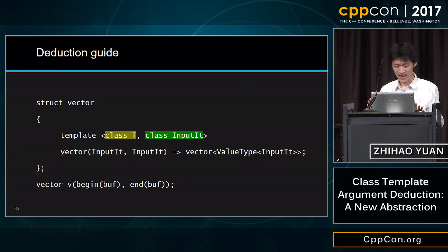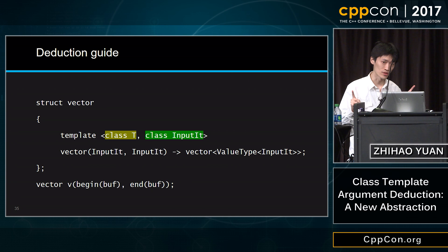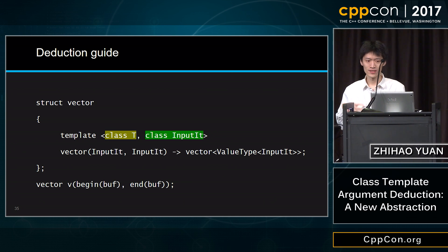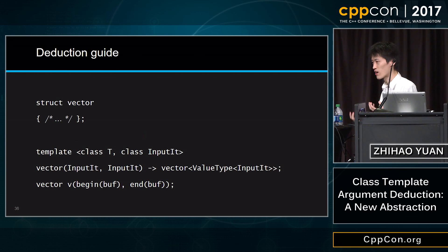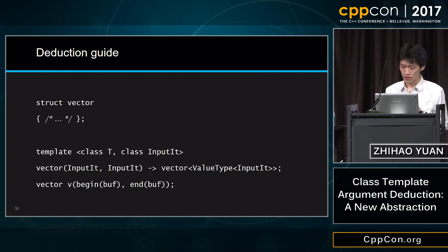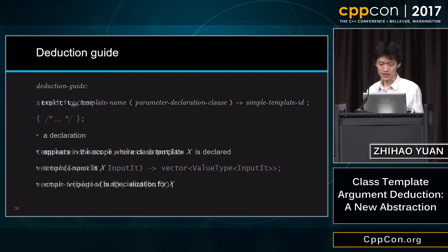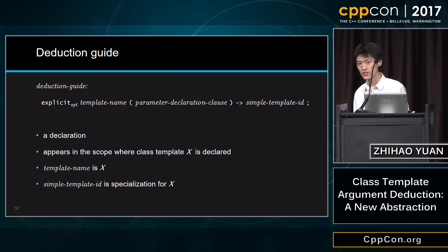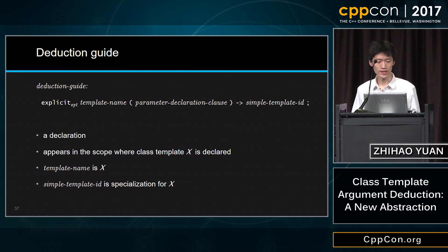Although this declaration is neither a function nor a function template, it's just a declaration that has to appear in the scope where the class template is declared. The simple template ID which appears in place of the return type has to be a specialization of the class template — which means we can use a trait to compute this type and match it back. From my point of view, this restriction is something to fix. So far, we have finished talking about all the deduction candidates. The first three are for automatic deduction; the last one is the focus for the rest of the talk.